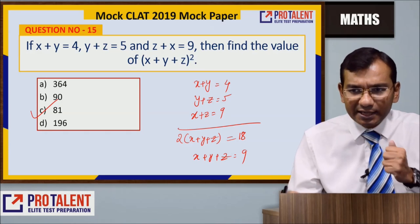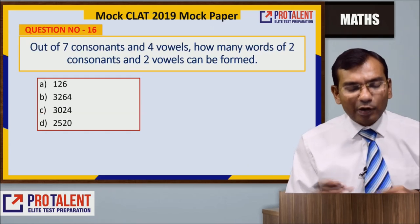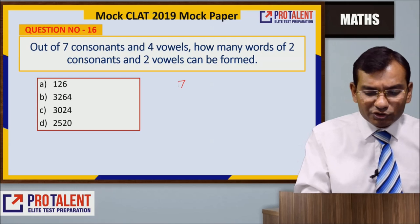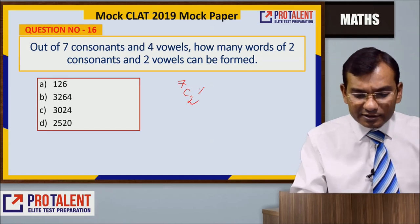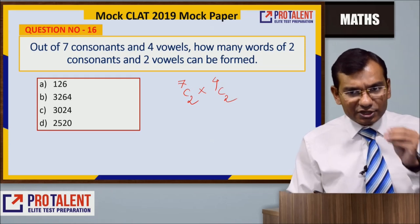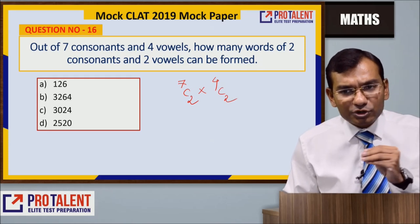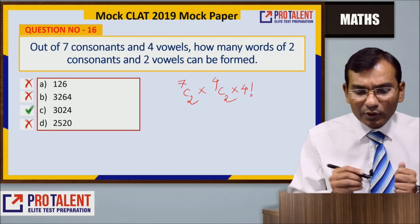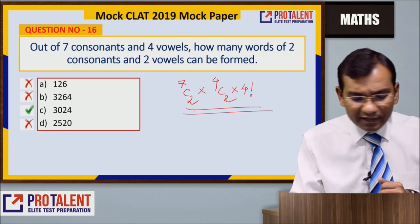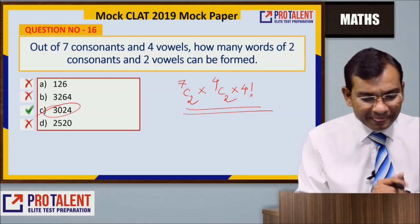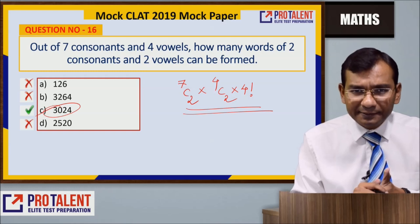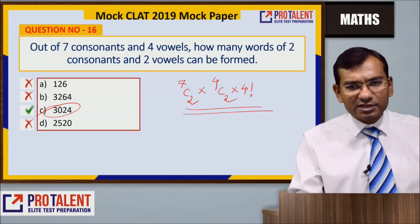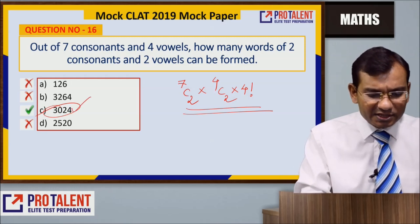Question number 16: Out of 7 consonants and 4 vowels, how many words of 2 consonants and 2 vowels can be formed? Selection: 7C2 × 4C2, then arrange 4 letters: multiply by 4!. The answer is 7C2 × 4C2 × 4! = 21 × 6 × 24 = 3024. The answer is 3024, which is also divisible by 7 — quickly identifiable from options.